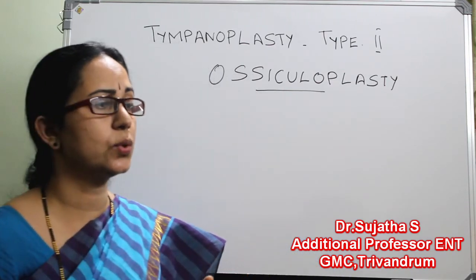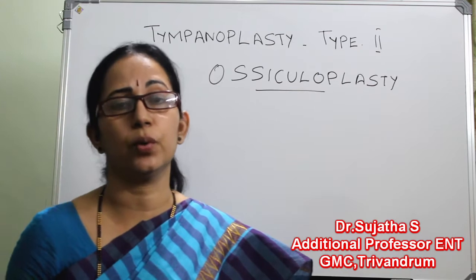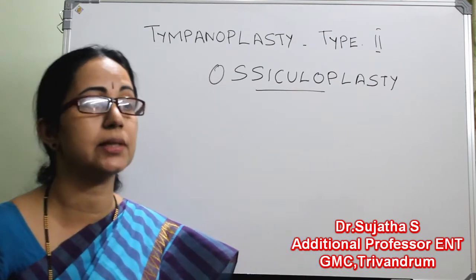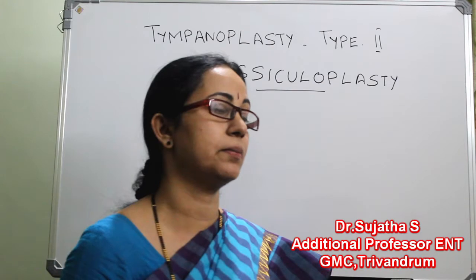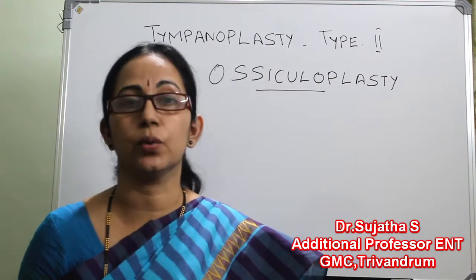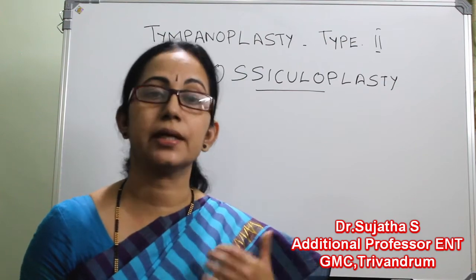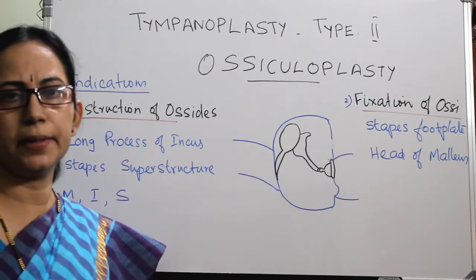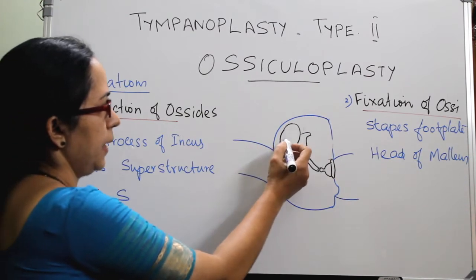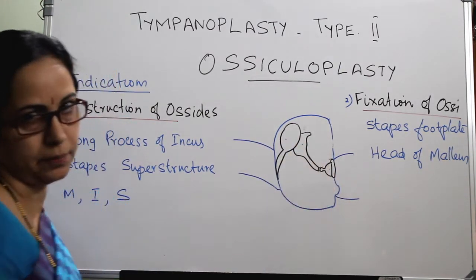Ossiculoplasty is plasty of the ossicles. There is myringoplasty, which is plastic repair of the myringus or the tympanic membrane. Like that, if there is a defect in the ossicle we have to repair it, and that is ossiculoplasty. This is the malleus with the myringus, incus, and stapes assembly.